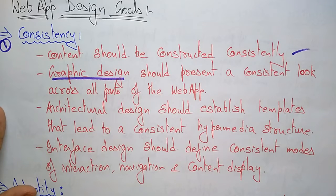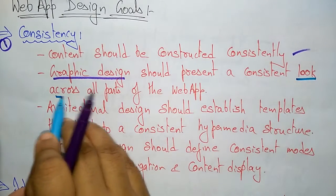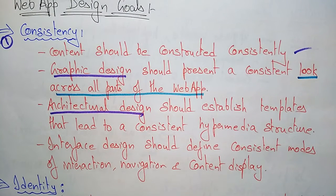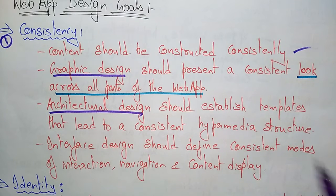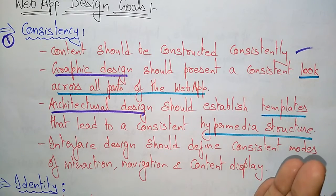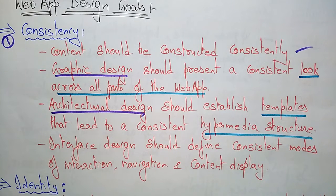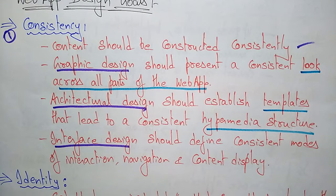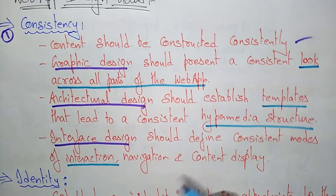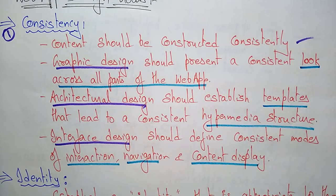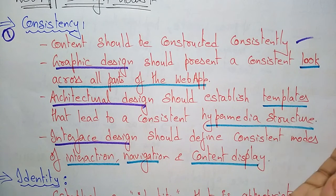The graphic design should always stay consistent across all parts of the web application. In terms of architectural design, the architectural design should establish templates that lead to a consistent hypermedia structure. The interface design present in the web app should define consistent modes of interaction, and that interface design should be consistent in the form of interaction, navigation, and content display.